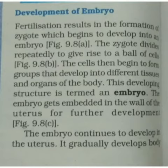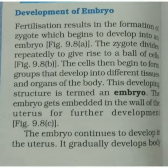The embryo reaches the uterus and gets embedded in the wall of the uterus for further development. This is called implantation. Further development of the embryo takes place in the uterus.